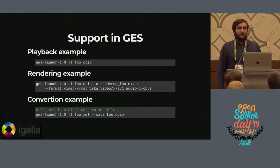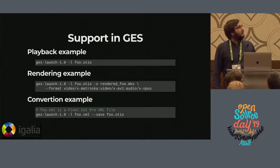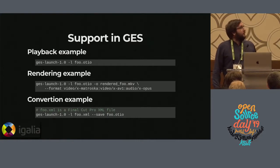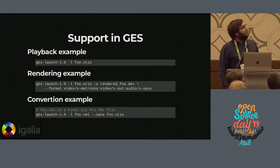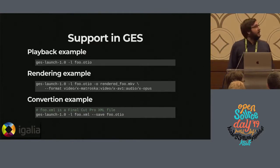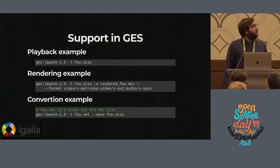You can also render that in whatever format you want. In the second example, we load the foo.otio file and render it to rendered_foo.mkv, specifying the format — we say we want Matroska with AV1 as the video codec and Opus as the audio codec. So it just renders the timeline described by the foo.otio file.